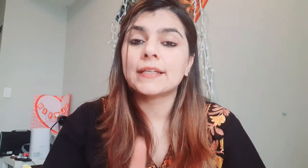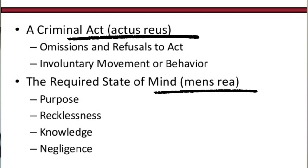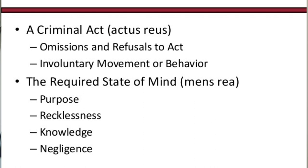People get confused because the examiners go into detail, but there's nothing to be confused about. Actus reus is your action part and mens rea is your mental part. Mens rea has degrees — it can be knowledge, willful blindness, or recklessness. These are all sub-categories. If you understand which broad topic they fall under, it becomes very easy to write the answer and refer to the related cases.